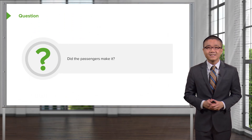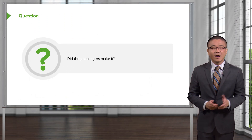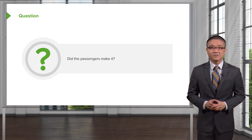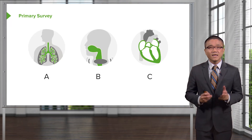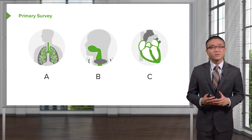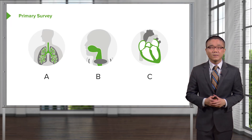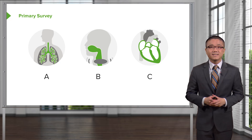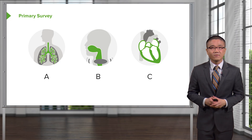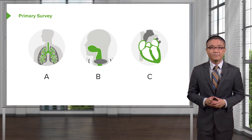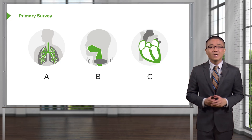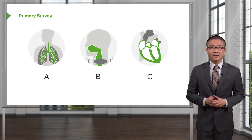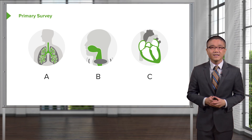The question is, did the passenger make it? In trauma, no matter how severe or the mechanism of injury, we always follow the ATLS protocol — the Advanced Trauma Life Support System. The priorities are easily delineated using alphabets: A for airway, B for breathing, and C for circulation.